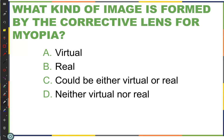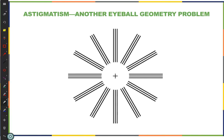Moving forward, our next vision problem is astigmatism. Probably everyone here who has glasses has some kind of prescription for astigmatism as well, since pretty much everyone has some degree of it. Does anybody know what an astigmatism is? A misshaping of the cornea — those are the only things we have simple physics corrections for.